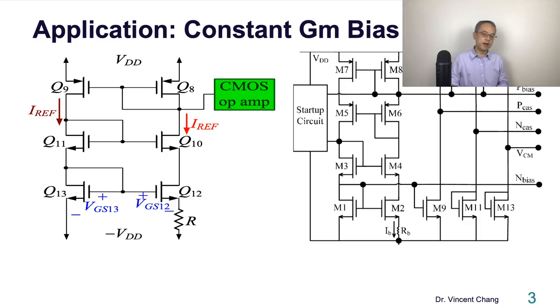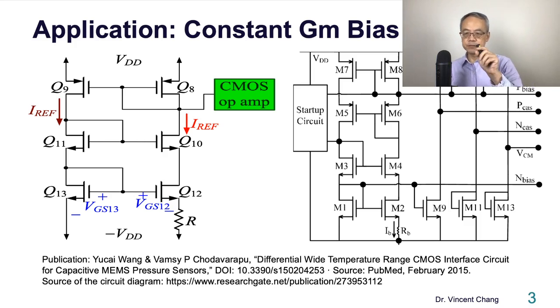This publication is done by researchers and the title is 'Differential Wide Temperature Range CMOS Interface Circuit for Capacitive MEMS Pressure Sensors'. The source of this circuit diagram is from Research Gate. You see a lot of pop-up. The purpose I show you this is to show the application in research, even in MEMS, not just amplifiers. Therefore you can recognize this, right?